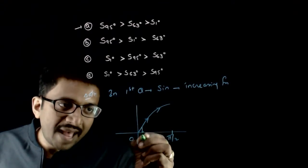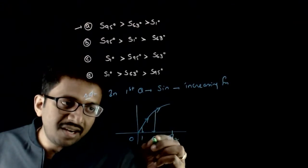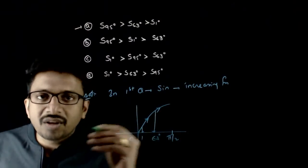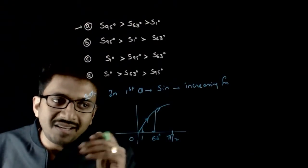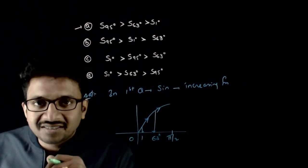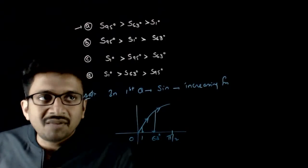So in the first quadrant, if you have angle 1 and angle 63, obviously 63 is more than 1, and sin 1 degree is less than sin 63 degrees. So sin 63 is more than sin 1 degree.